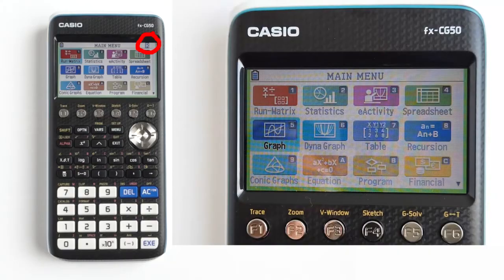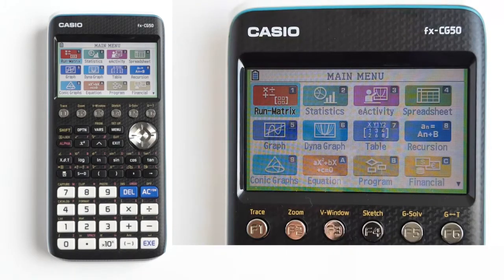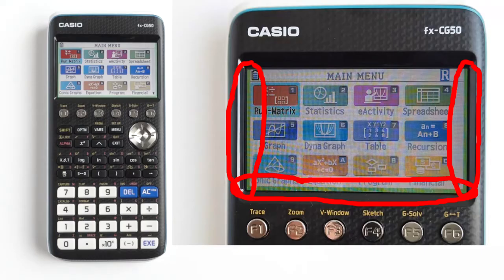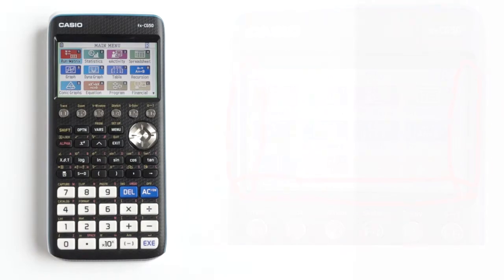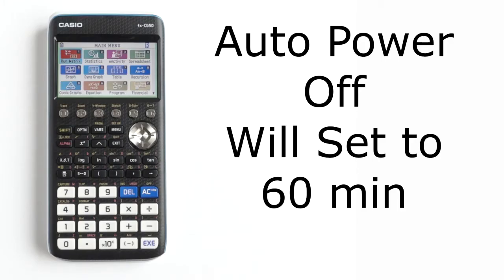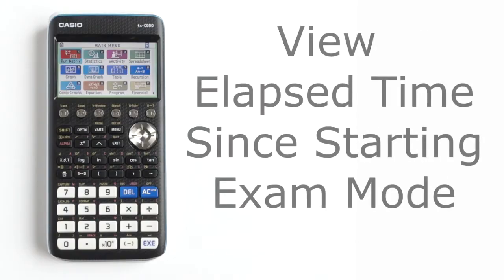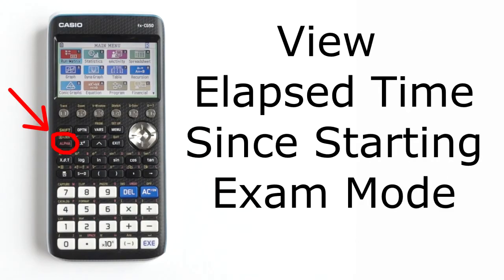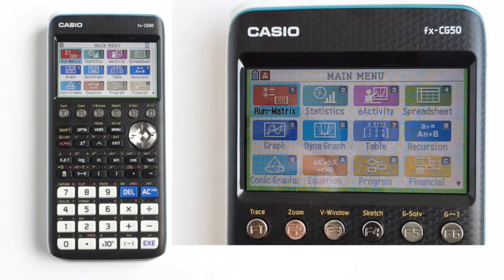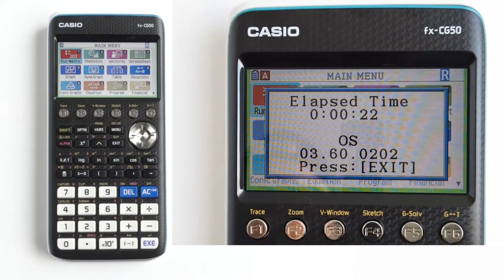Then you are in exam mode for the IB exam. You will see this flashing R in the upper right of the screen. That flashing R will slow down after about 15 minutes in exam mode. You will also see this green border on the sides and the bottom of the screen. If you do not see an R in a green border, then you are not in IB exam mode. When in IB exam mode, the auto power off will automatically be set to 60 minutes. To see the elapsed time since you have been in exam mode, press the red alpha button, then the negative sign button. Then the screen will appear briefly, about 3 seconds, showing the elapsed time.